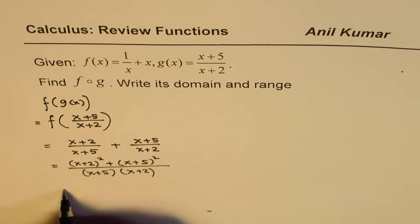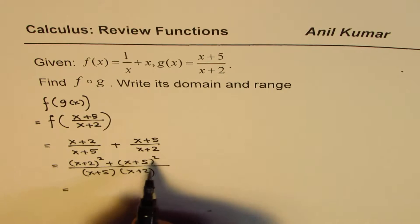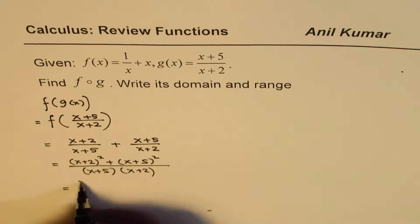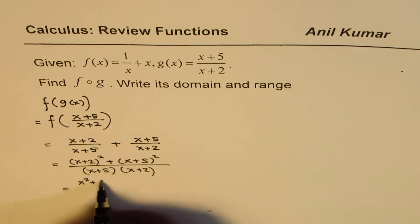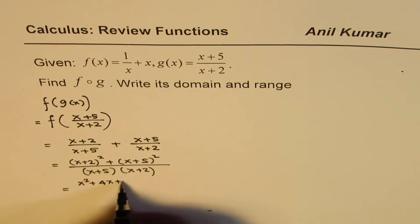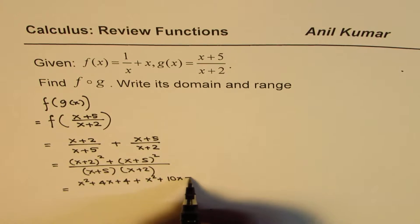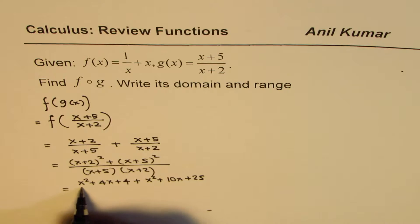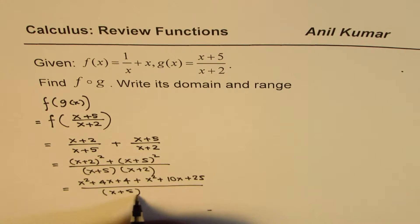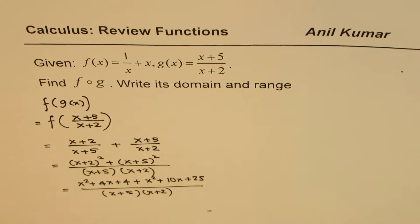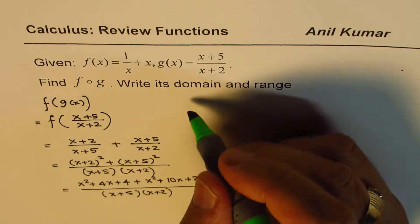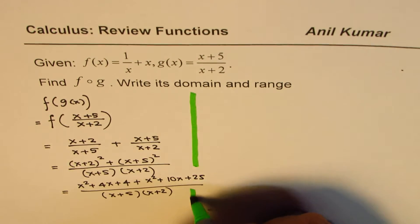Well, let us go a step further. Simplifying this, we could write this as x square plus 4x plus 4, expanding the first part, and then x square plus 10x plus 25 divided by, never expand denominator, make this a rule. So I am not expanding denominator.